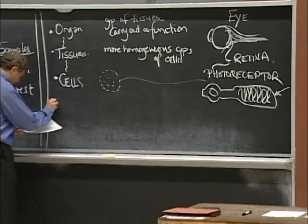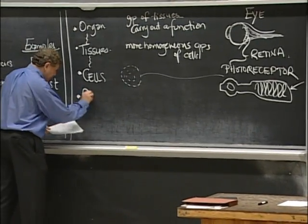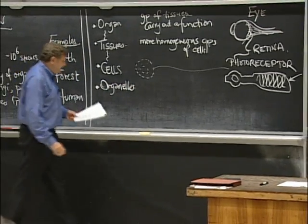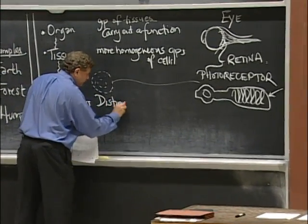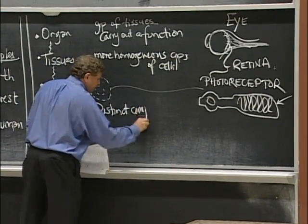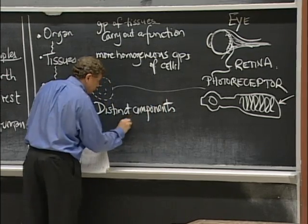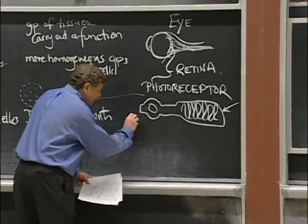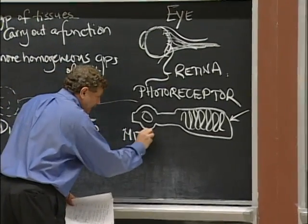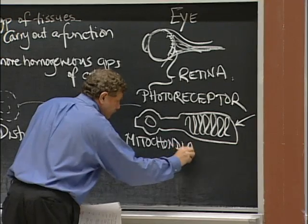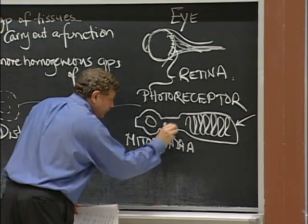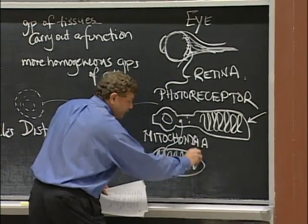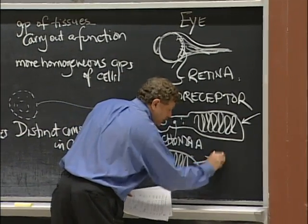And that shape, there's our nucleus. The light comes and impinges there, sends a signal out the other end. That's a cell. Then we get down to organelles. These are distinct components within a cell. For example, this photoreceptor is using up a lot of energy. It has mitochondria. These mitochondria in here are involved in producing efficiently ATP.